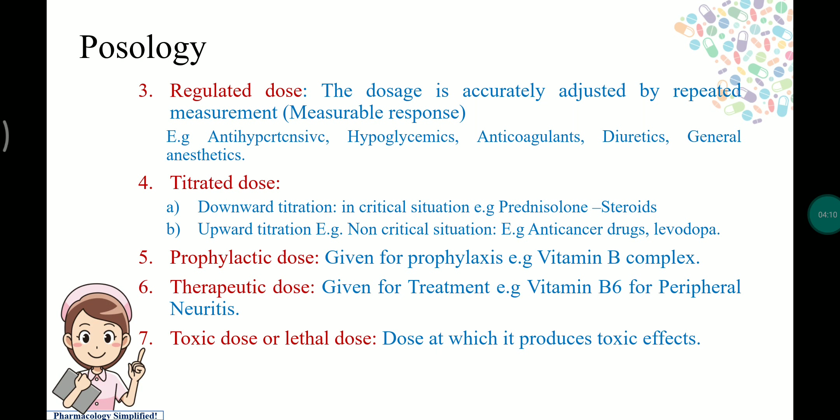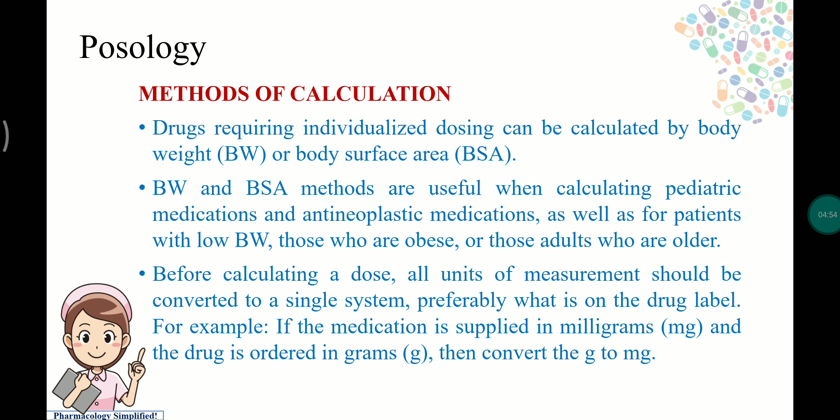Examples of upward titration include levodopa and anti-cancer drugs. Prophylactic dose means taking a drug before a disease or infection, for example vitamin B complex. Therapeutic dose is given during treatment — for example, vitamin B6 for peripheral neuritis. Toxic or lethal dose is the dose at which the drug produces dangerous or toxic effects.